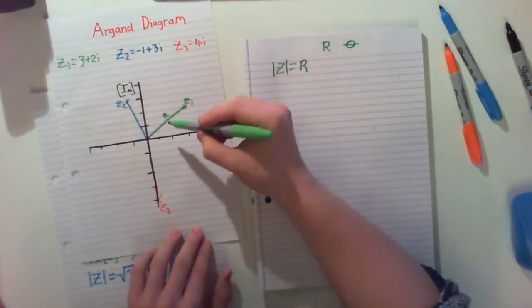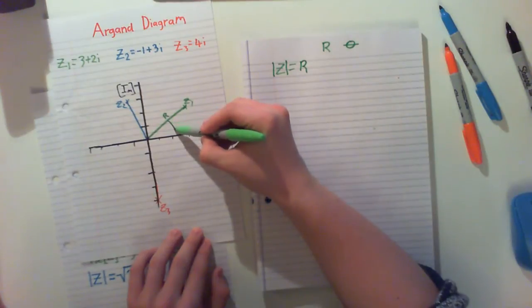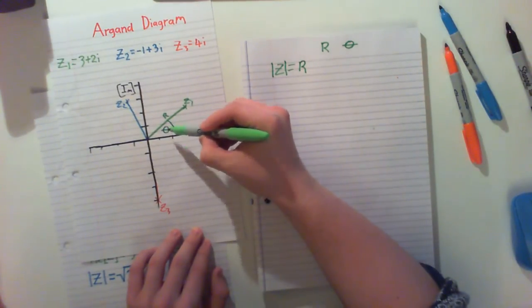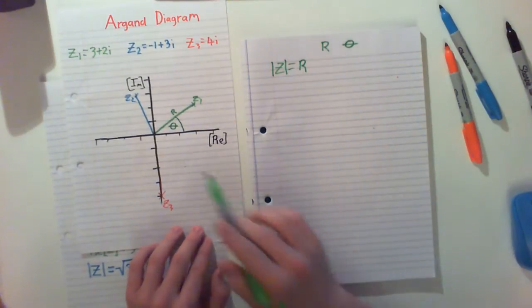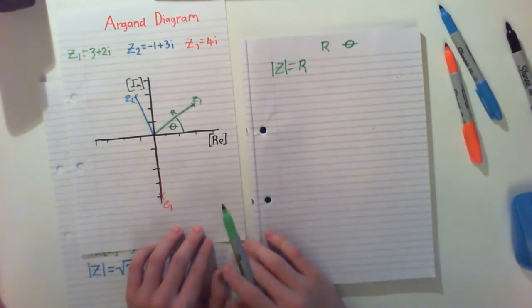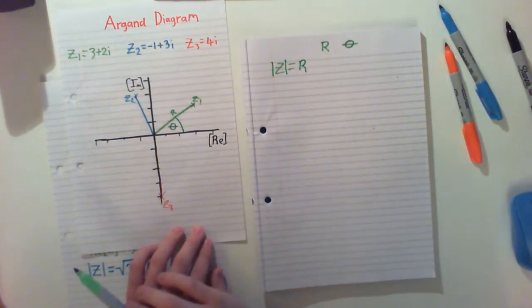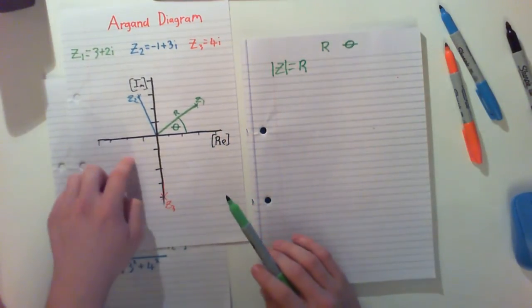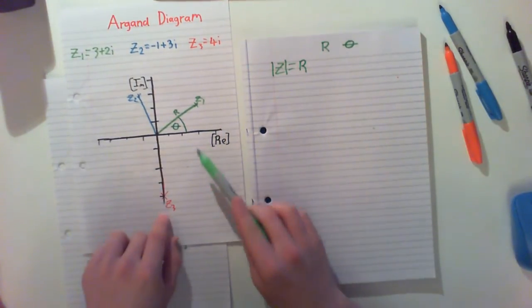And our angle theta is our angle up to when we get to our number. Now we always go anti-clockwise around and we always give the positive. You may have been shown before to give you the smallest value. So if you're somewhere here or to say for Z3,